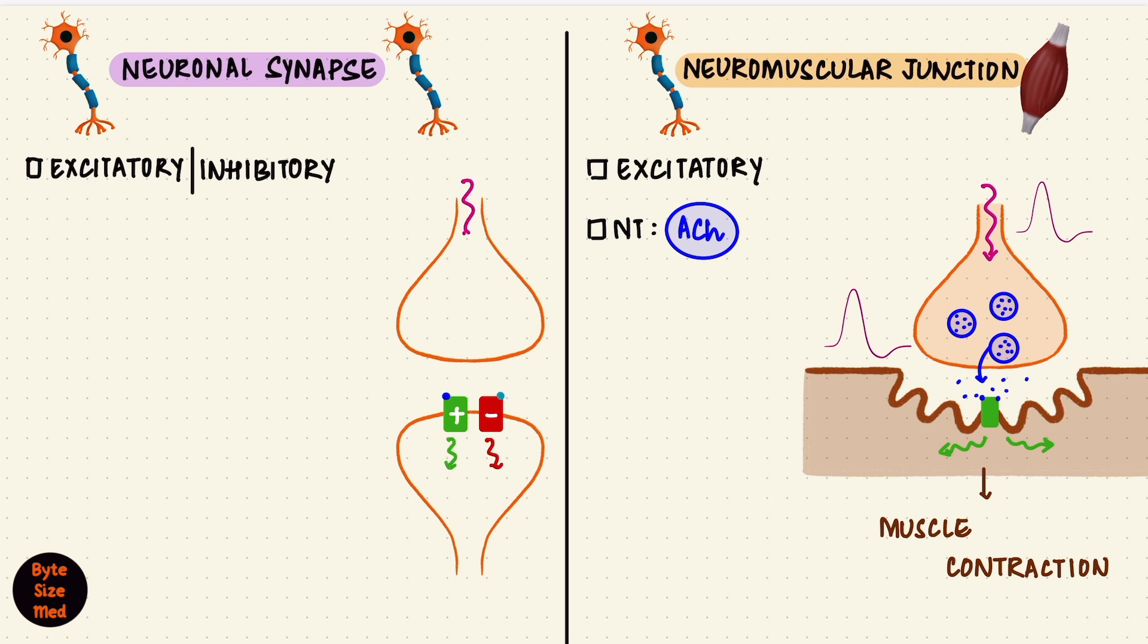There's lots of different kinds of neurotransmitters in neuronal synapses, including acetylcholine. There's glutamate, glycine, serotonin, norepinephrine, etc., and they have different kinds of receptors.